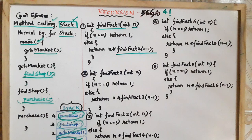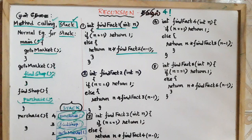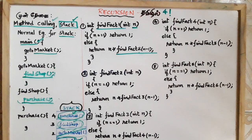This is a prerequisite for method calling. What do you know about stack flow or stack frame? We can see that recursion is very easy. How do you know about stack flow or frame?